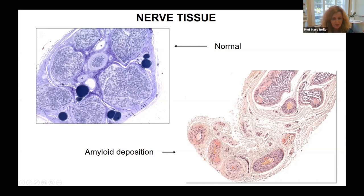In the case of TTR amyloidosis, the protein is TTR, although other proteins can form amyloid as well. As you can imagine, if any part of the body gradually gets replaced by this amyloid, you can understand why that particular part of the body wouldn't work properly. In this case, we mean nerves.